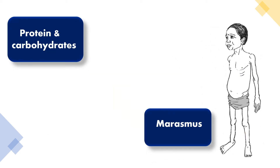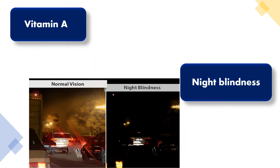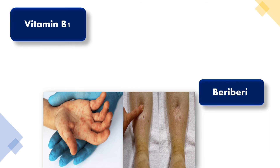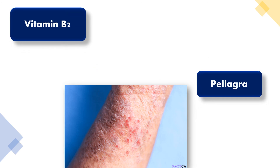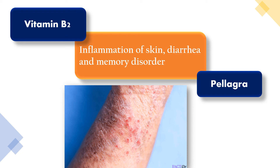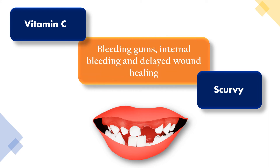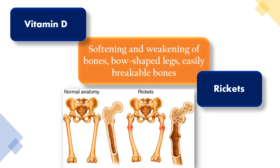Marasmus is caused due to lack of protein and carbohydrate; symptoms are thinning, weight loss, weakness, and loose folds of skin. Night blindness is caused due to lack of vitamin A; symptoms are poor vision. Beriberi is caused due to lack of vitamin B1; symptoms are weakening of muscles, altered muscle coordination, and degeneration of nerves.